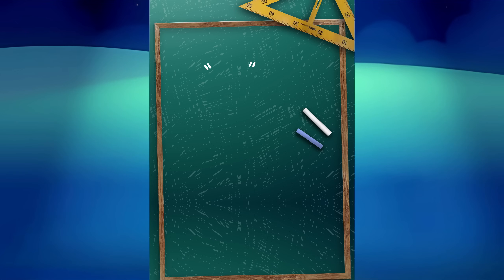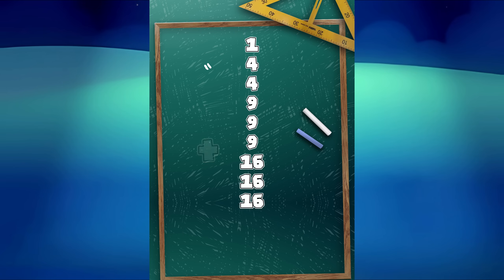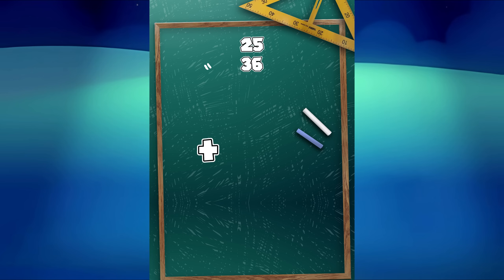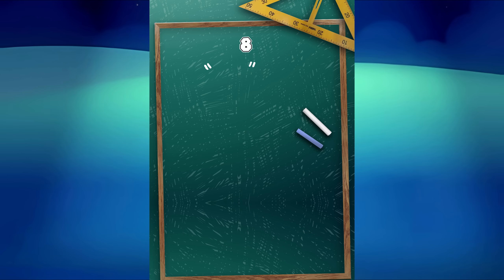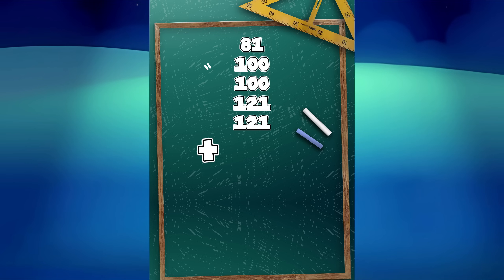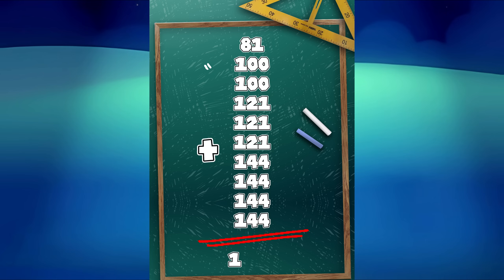Let's do a recap. 1 plus 4 plus 4 plus 9 plus 9 plus 9 plus 16 plus 16 plus 16 plus 16 equals 100. 25 plus 36 plus 36 plus 49 plus 49 plus 49 plus 64 plus 64 plus 64 plus 64 equals 500. 81 plus 100 plus 100 plus 121 plus 121 plus 121 plus 144 plus 144 plus 144 plus 144 equals 1,220.